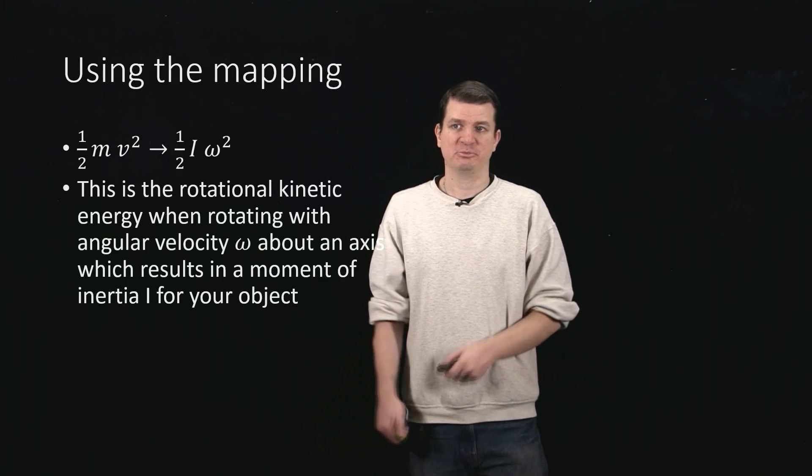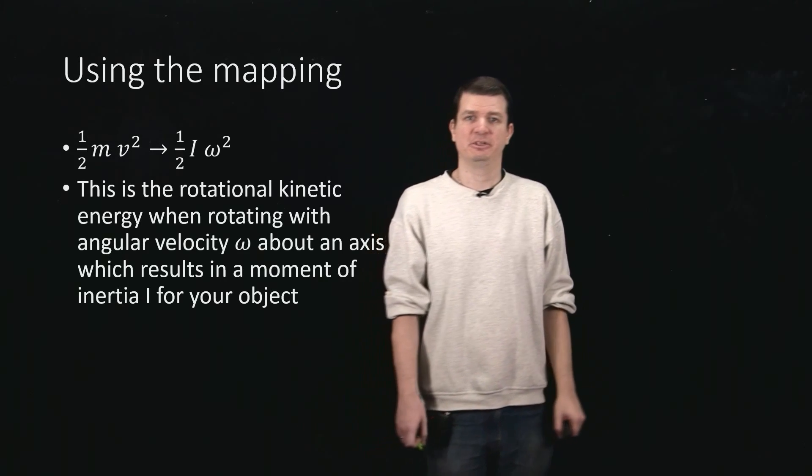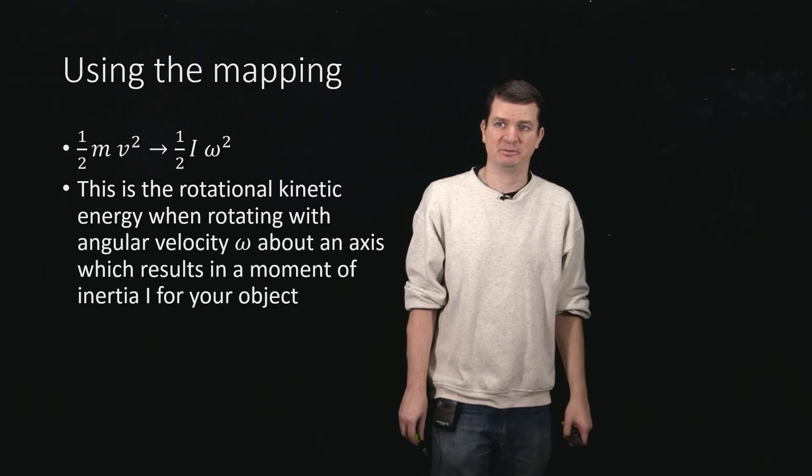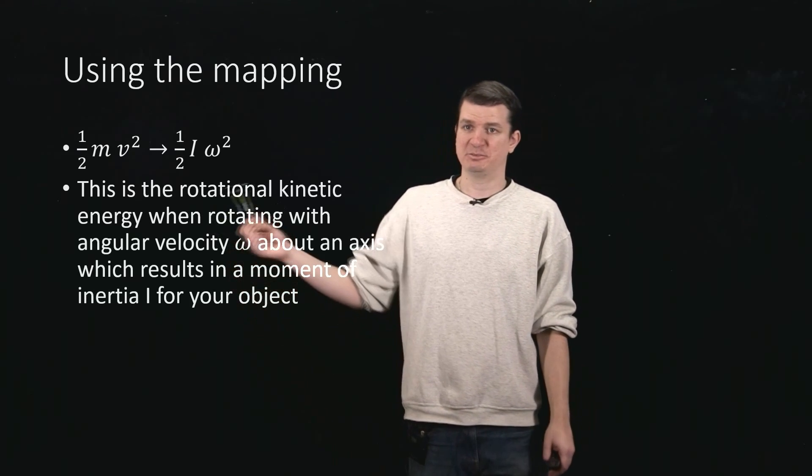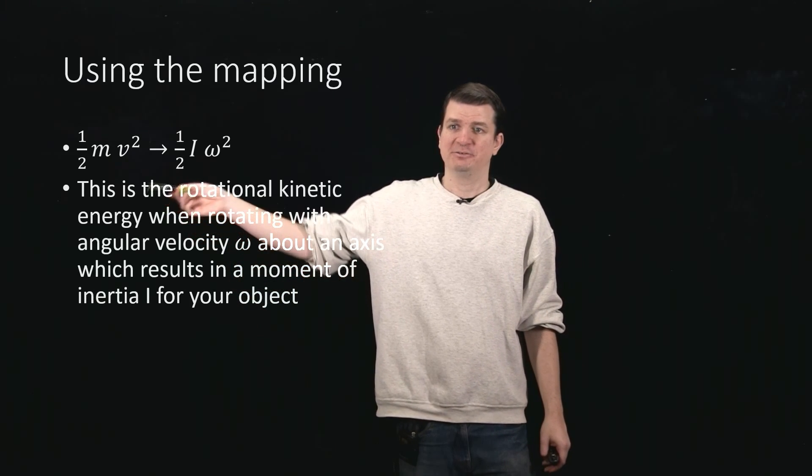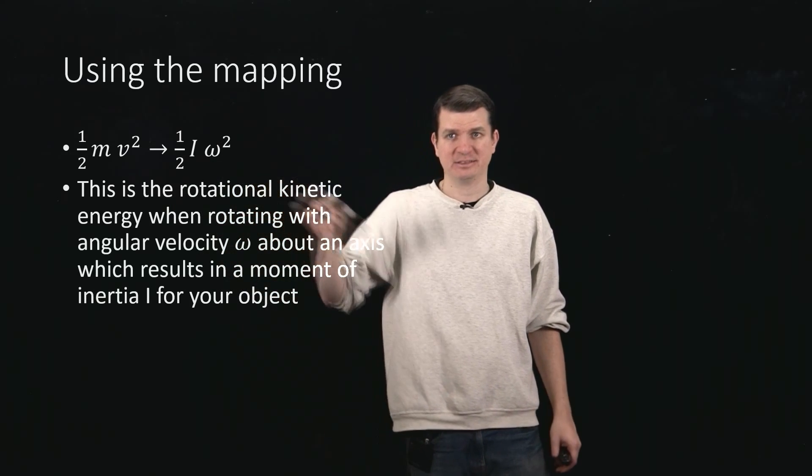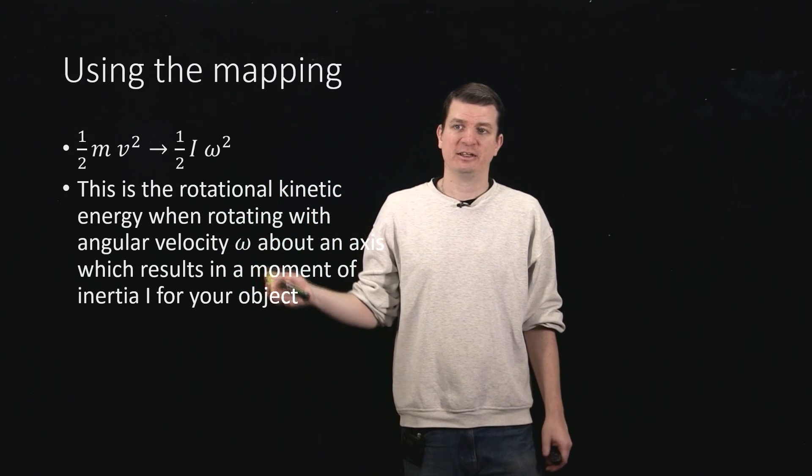So how can we actually compute that? Well again, we can just use the mapping to arrive at the result. What you actually have to do is basically integrate over your object to figure out what one half mv squared is when you sum for every little piece of mass in your object. But luckily, we don't need to.